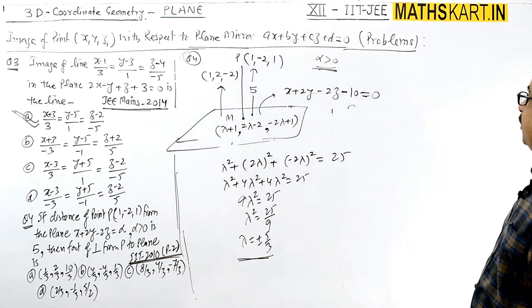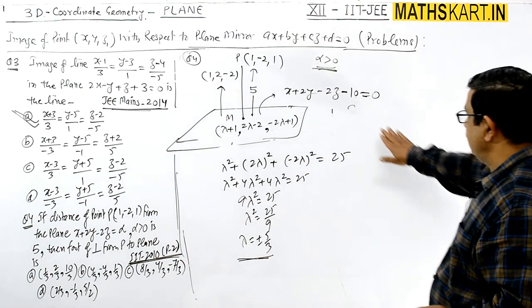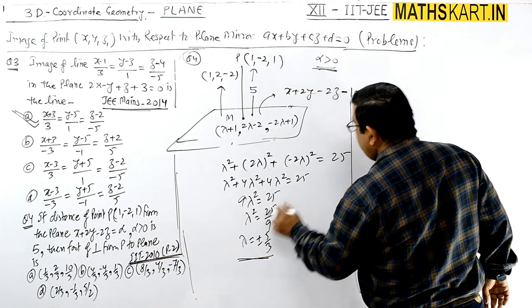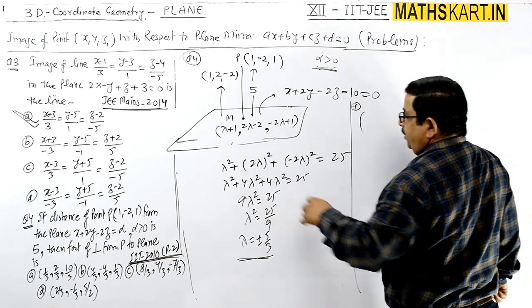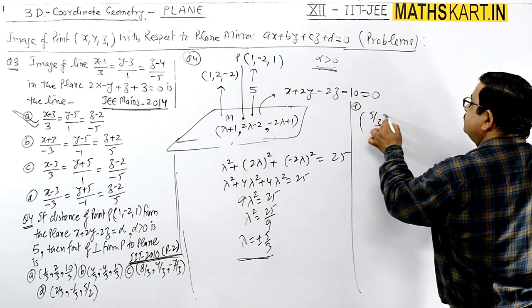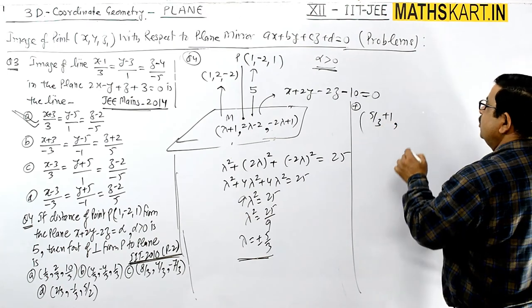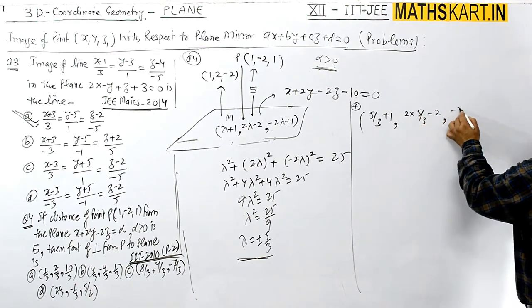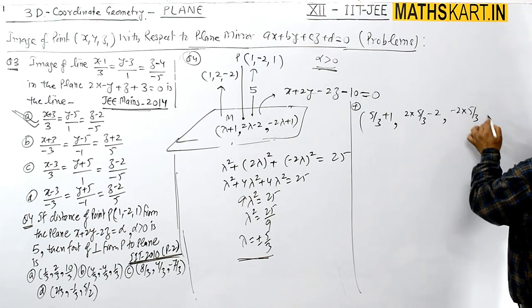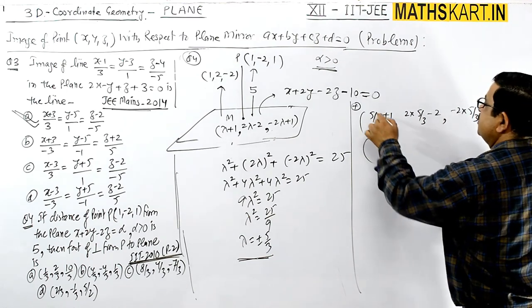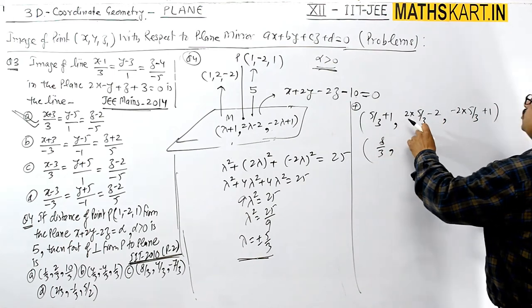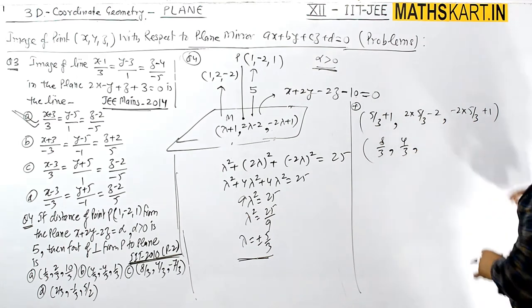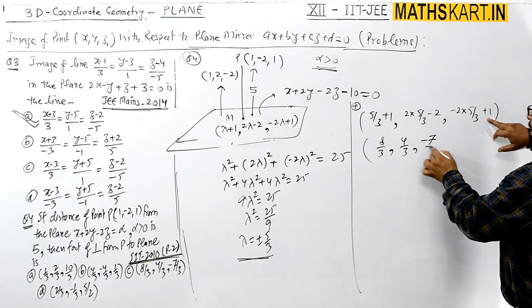If you take the positive value of λ, we are getting this λ. Suppose by taking positive, we can decide the point. So 5/3 + 1, 2 times λ is 5/3 - 2, and -2 times λ is 5/3, 5/3 + 1. Simplifying these points: 8/3, and this equals 10 - 6 = 4/3, and can be written as -10 + 3 = -7/3.